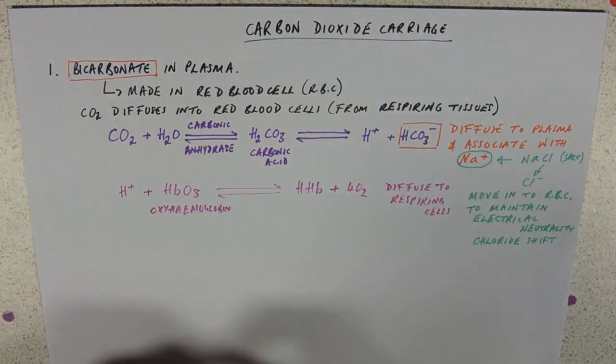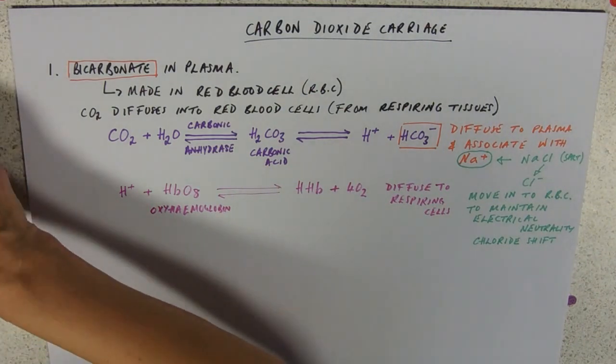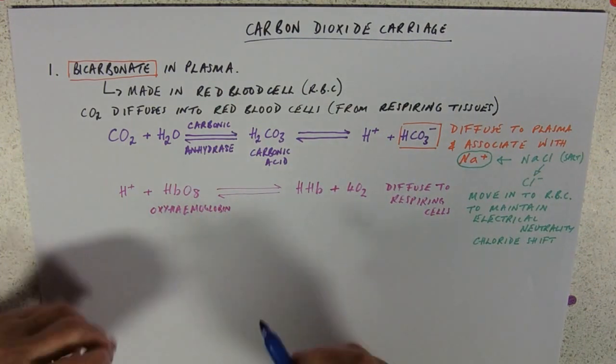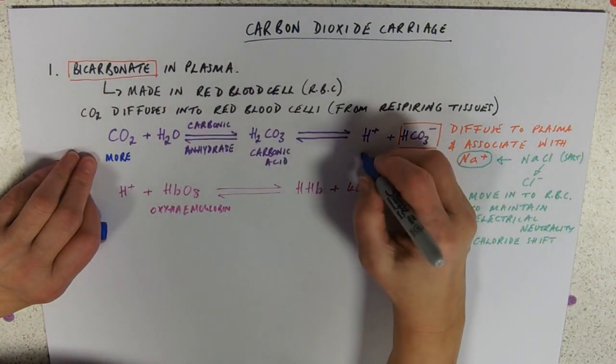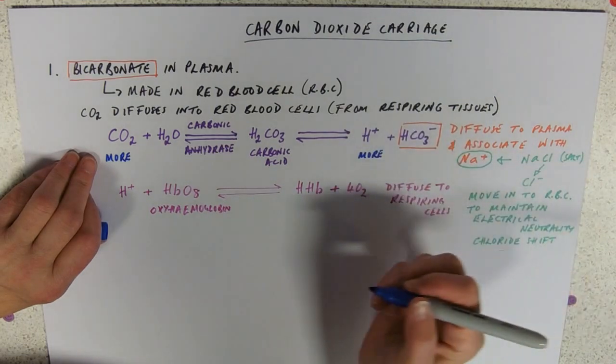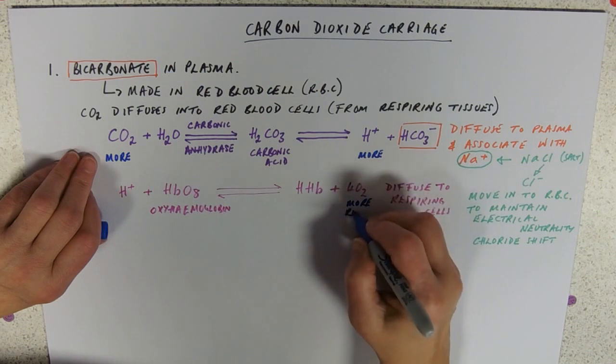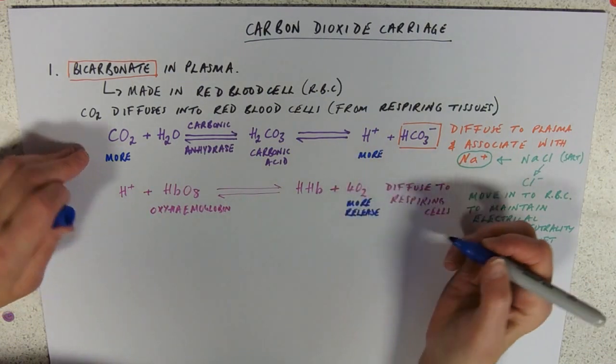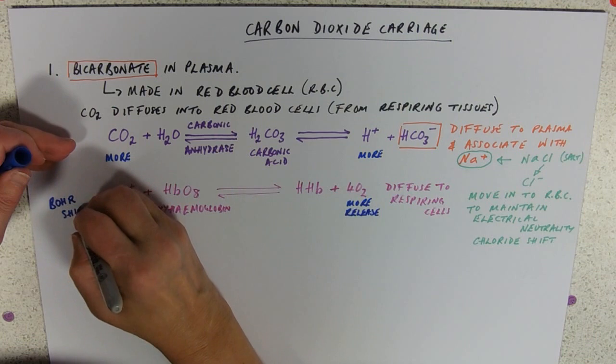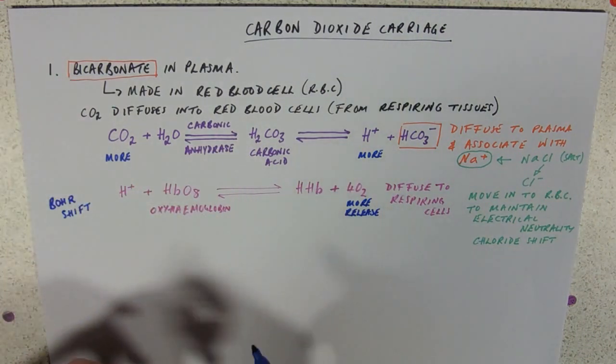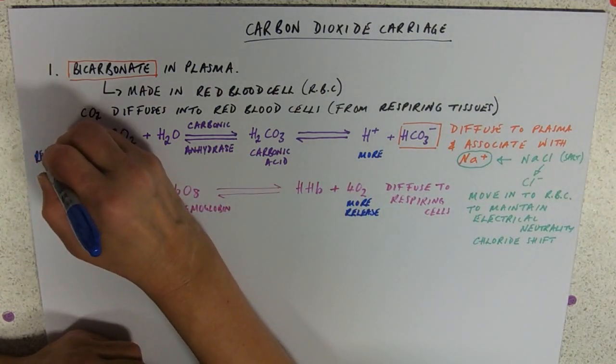So remember we did the Bohr shift in a previous video. Now curves to the right video. And so we can see now that if in respiration we've got more of this, then we're going to get more hydrogen ions and we're going to get more release. So that's the Bohr shift. And it is also a reason that you can quote for why the oxygen dissociates. So this is the reason for oxygen dissociation.